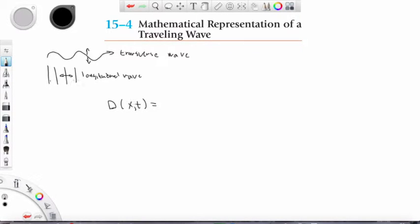It's the displacement of these air or water molecules at any given time t and any given point in space. The general formulation is A times sine of kx minus omega t plus some phase angle phi.